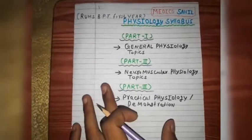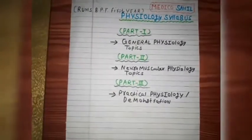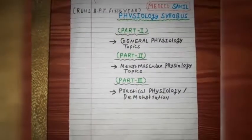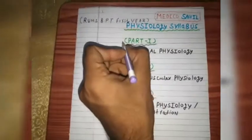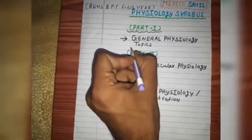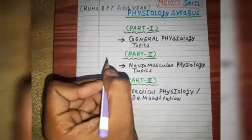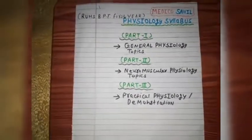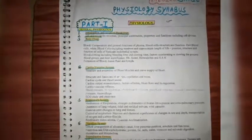The Physiology Syllabus can be easily divided into three parts. Part 1: General Physiology Topics covered in Physiology. Part 2: Neuromuscular Physiology Topics. Part 3: Practical Physiology and Demonstration Topics. Now we will understand about Physiology Syllabus Part 1.